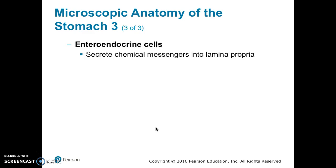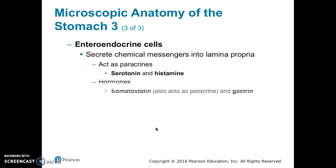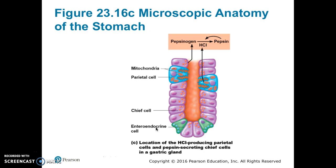Enteroendocrine cells secrete chemical messengers into the lamina propria. Some secretions, like serotonin and histamine, act locally as paracrines. Other secretions, like somatostatin, act as both a paracrine and as a hormone acting on digestive organs. Gastrin is a hormone that regulates stomach secretion and motility.